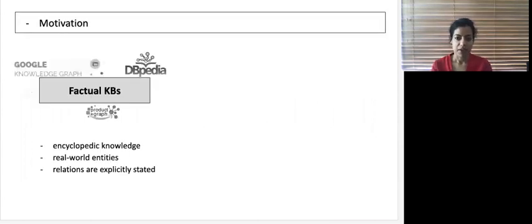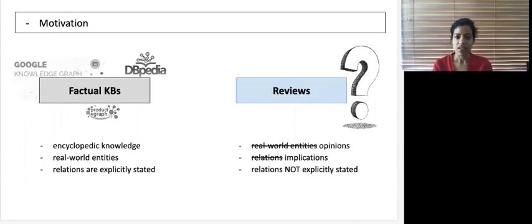Knowledge bases are everywhere today. A majority of these are built from texts such as Wikipedia and contain information about real-world entities and their relationships. But there is still tons of information available today in user-written data such as reviews which is not captured by these existing knowledge bases.